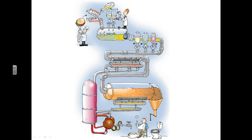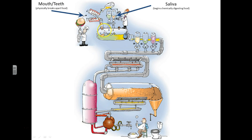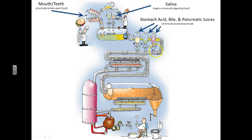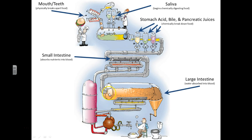This is you in an industrialized setting — your digestive tract start to finish. At the start, you've got your mouth and your teeth where you physically break apart the food. Next up, saliva goes in there, and once the food's been broken up, saliva starts chemically digesting the food. Your stomach acid, bile, and pancreatic juices are going to chemically break down the food further. The small intestine is where you absorb those nutrients into the blood — all the good stuff is pulled out of the food and put into the blood where it can be used and transported. Then you get to the large intestine where water is pulled out and absorbed, and the leftover is concentrated as waste, which goes out the rectum.